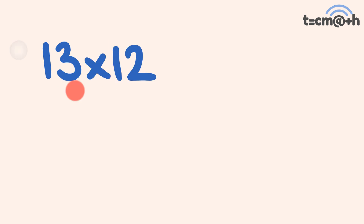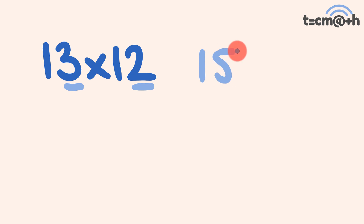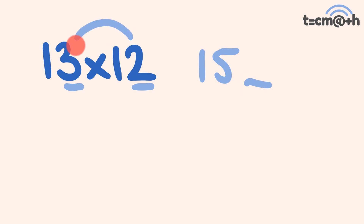The second trick is multiplying by teen numbers, such as 13 times 12. We look at the units digits. We take the 2 and add it to 13: 13 plus 2 is equal to 15 — that's the first part of our answer. For the units part, we multiply the two units digits: 3 times 2 is equal to 6. So 13 times 12 is equal to 156.